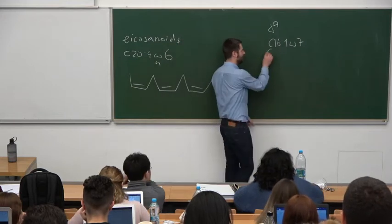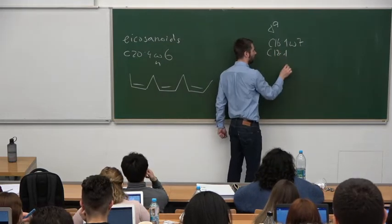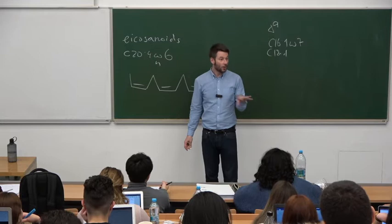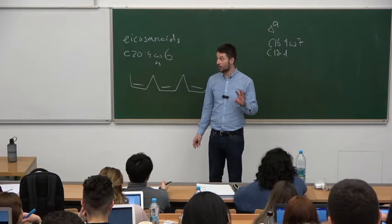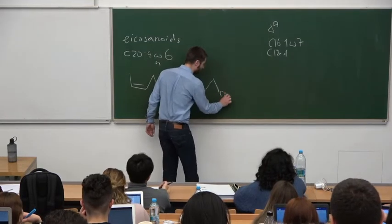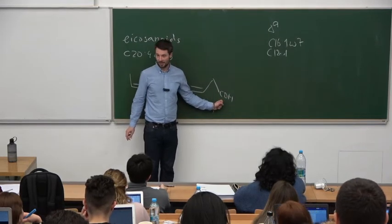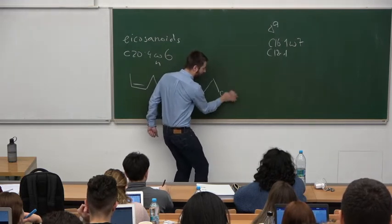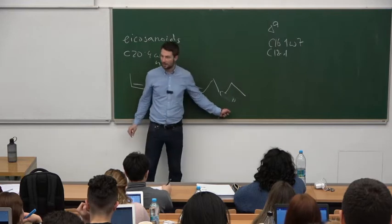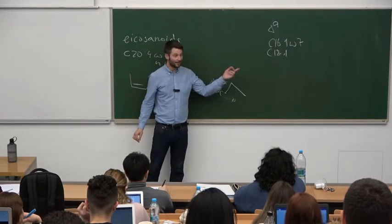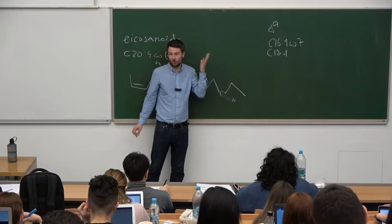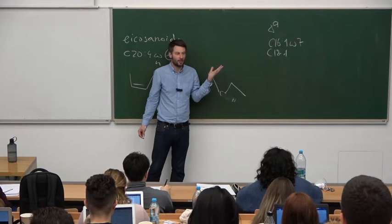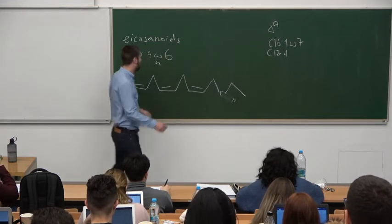Before we can use this C20 acid to make eicosanoids, we have to release this arachidonic acid from the phospholipid. For that, we need an enzyme. The enzymes that can hydrolyze phospholipids are called phospholipases. A phospholipid has an alcohol called glycerol, two fatty acids bound by ester bonds, a phosphate group, and something called a base — which could be choline, ethanolamine, serine, or phosphatidylinositol bisphosphate, etc.